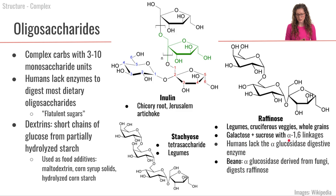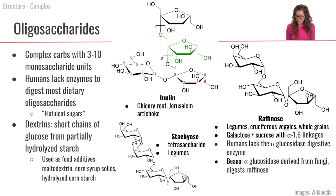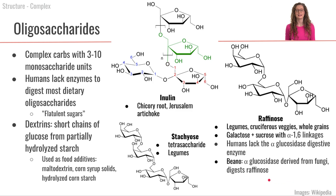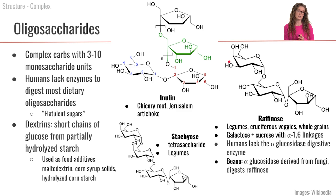Humans don't have the enzymes to hydrolyze these alpha-1,6 linkages, which is why raffinose is considered a flatulent sugar. However, you can take a product called Beano, which is produced from a mushroom enzyme — alpha-glycosidase — that has the ability to hydrolyze these alpha-1,6 linkages and help you digest this raffinose oligosaccharide.